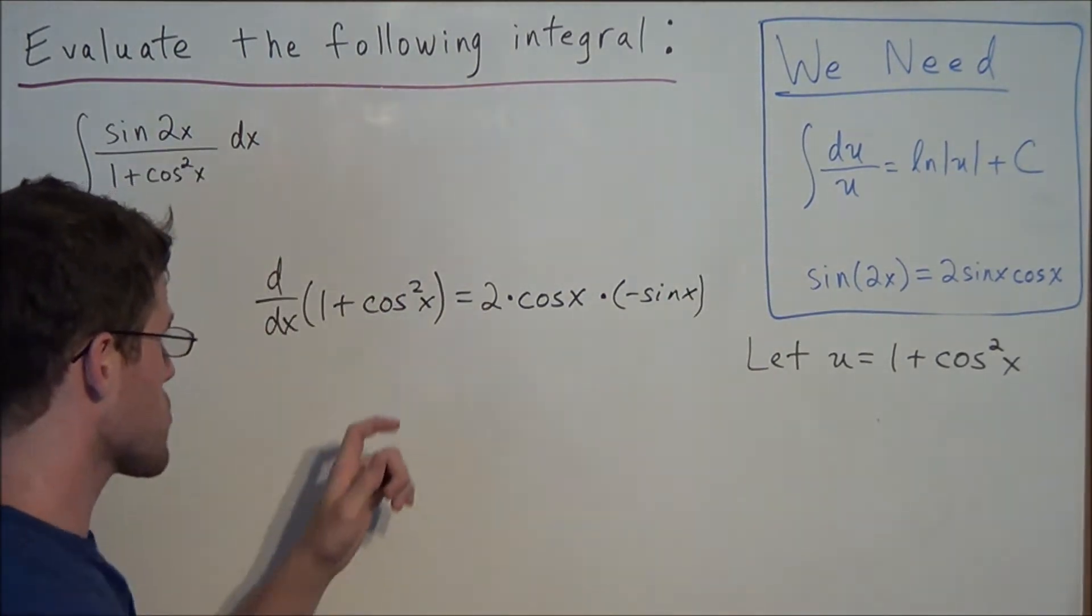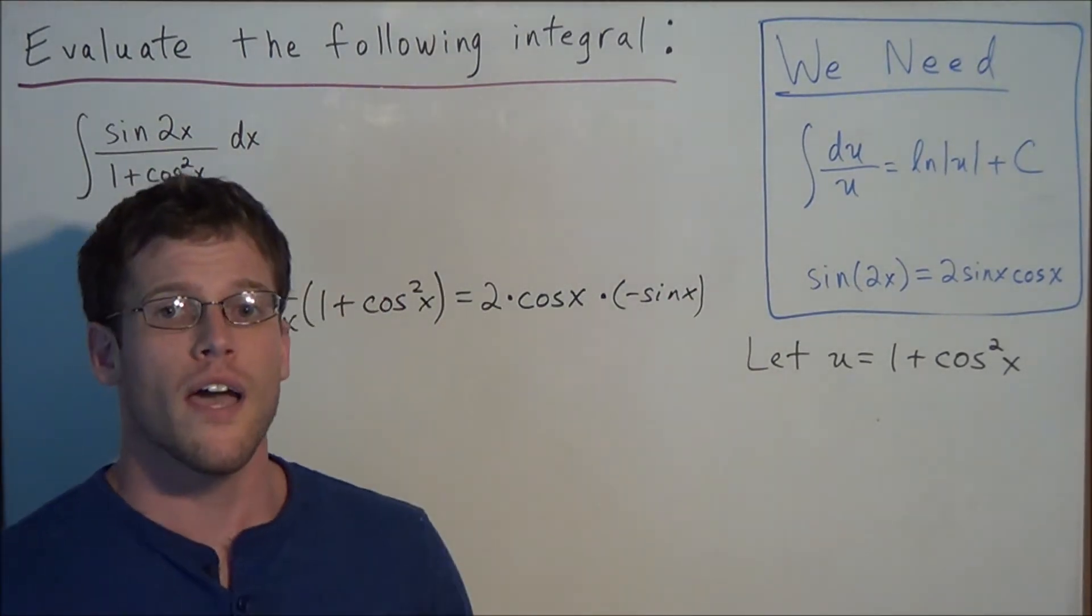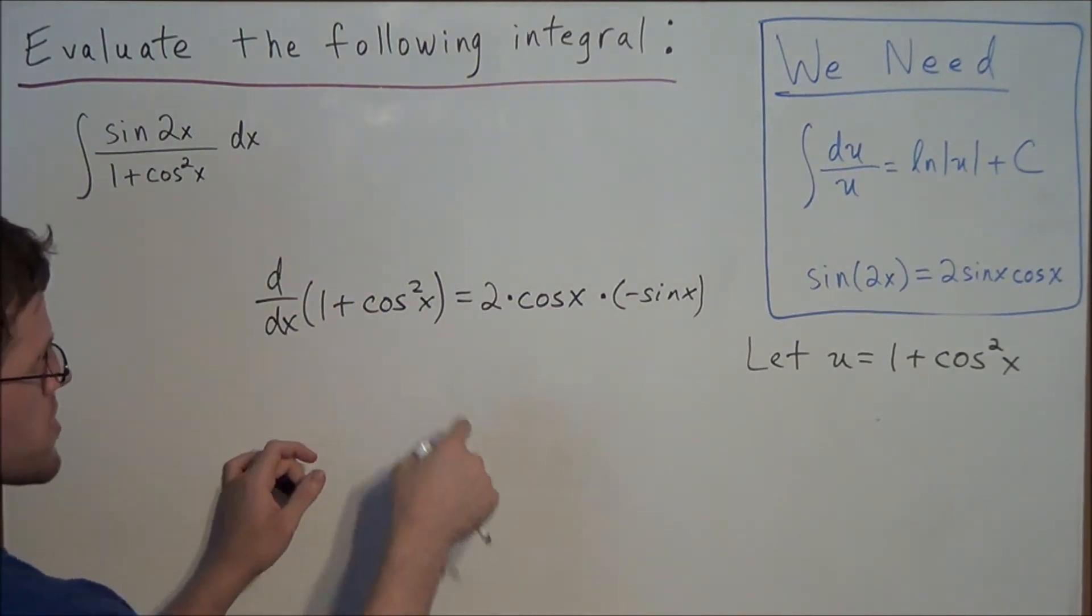So all we did was use the power rule and the chain rule to find the derivative of 1 plus cosine squared x.